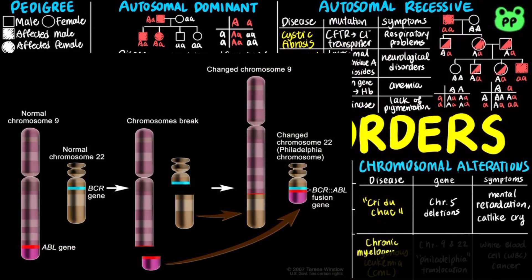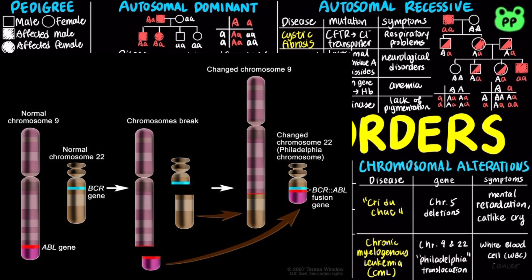Chronic myelogenous leukemia, abbreviated as CML, is a white blood cell cancer caused by reciprocal translocation of chromosomes 9 and 22. Chromosome 22 is also known as the Philadelphia chromosome.